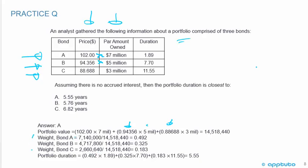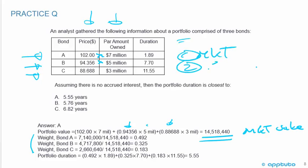Adding the three bonds together gives a total market value of 14,518,440. The weights are: bond A 49.2%, bond B 32.5%, bond C 18.3%. Then portfolio duration = 0.492 times 1.89 plus 0.325 times 7.7 plus 0.183 times 11.55. The correct answer is A: 5.55 years.